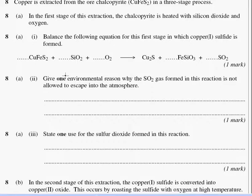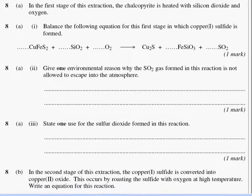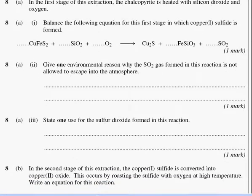Balance the following equation for this first stage in which copper(I) sulfide is formed. Alright, let's have a look at it. How would I address this? Let me look at it. So what I'm looking at, and the thing that catches my eye first, is there's no number in prior. So they've given us gaps. They've given us gaps to put numbers in.